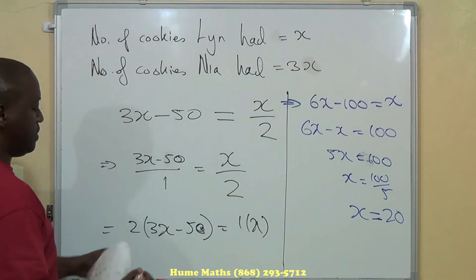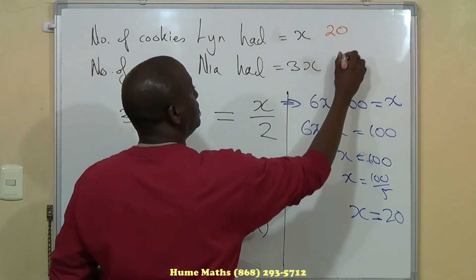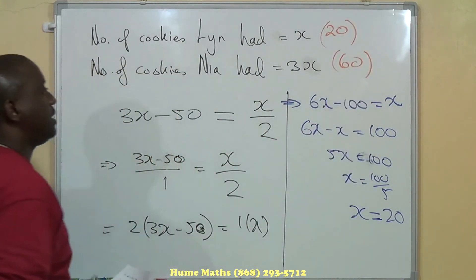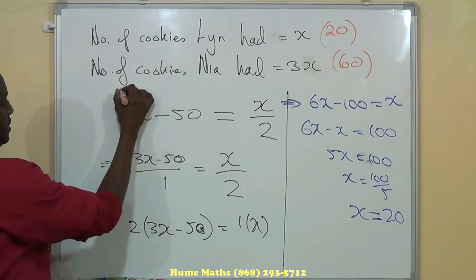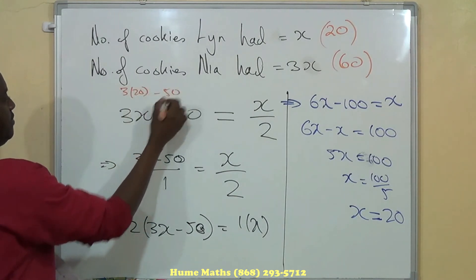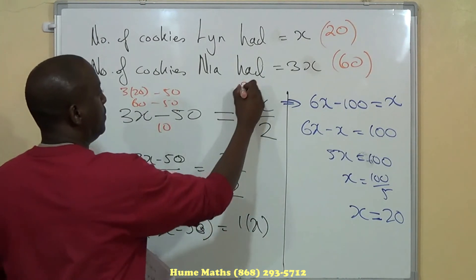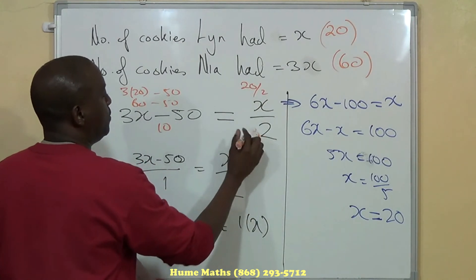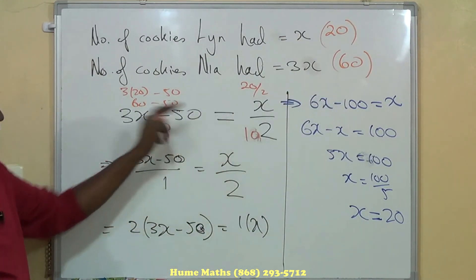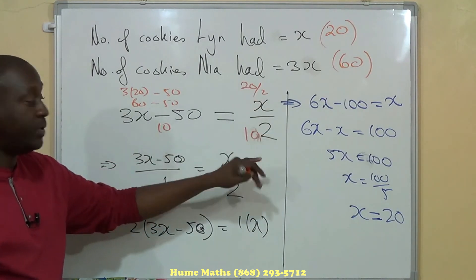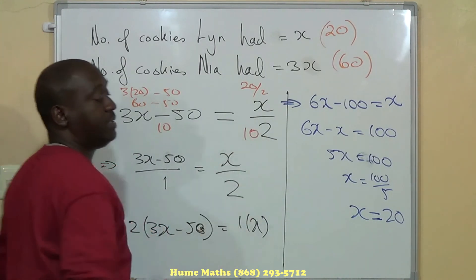That puts us in a position to double-check the answer. So at 20 for Lynn and 60 for Nia — let's check: 3 times 20 minus 50 is 60 minus 50, which equals 10. And X over 2 is 20 over 2, which also equals 10. The figures match up, so we know that the answer is in fact correct.